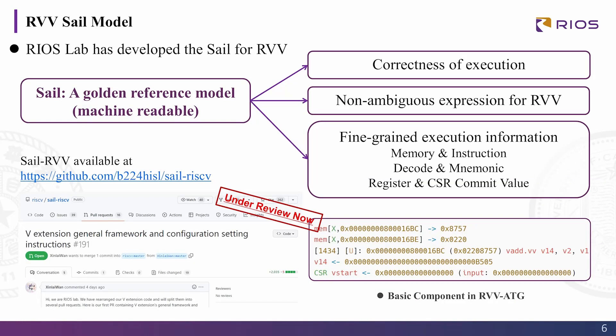RealSlab has developed the SAIL model for RVV. The SAIL model can guarantee the correctness of execution, give a non-ambiguous expression for the spec, and most importantly, provide fine-grained execution information. This execution log is important and makes it a basic component for our RVV-ATG.